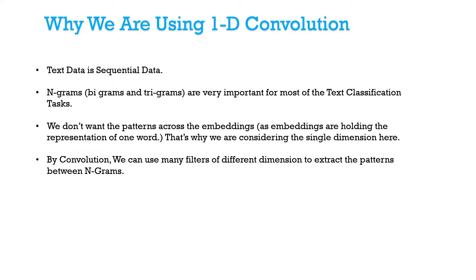By n-grams we mean bigrams, trigrams, fourgrams, etc. A bigram is the representation of two continuous words present in the text. A trigram is the representation of three continuous words, and a fourgram is four continuous words. When we want to capture patterns from these bigrams, trigrams, and more n-grams, applying the convolution operation makes it easy to perform downstream tasks.